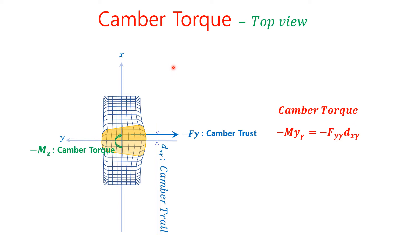The moment produced by camber trail is called camber torque. As expressed in the equation, camber torque is equal to camber thrust multiplied by camber trail. Camber torque can be ignored in the linear analysis of vehicle dynamics because its value is very small compared with the self-aligning moment due to side slip angle.